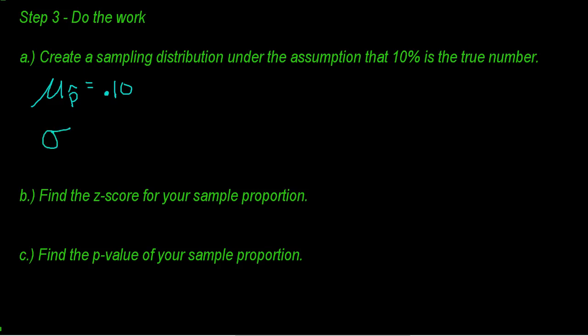Step three is my favorite step, doing all the work. There are three steps inside of step three. First, we've got to create a sampling distribution under the assumption that 10% is true. The mean of all those p-hats would be 10%.